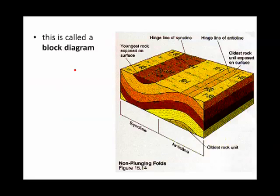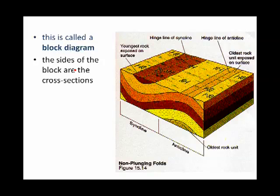Here we have what's known as a block diagram, because, hey, it looks like a block. The sides of the block diagrams are cross-sections. So this cross-section here shows us that we have a clear syncline and an anticline.